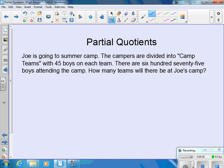So we have 675 boys. And we know there's going to be 45 boys on each of the teams, and we want to find out how many teams will be at the camp. So again, we look at our divisor, and we're thinking of groups of 45.